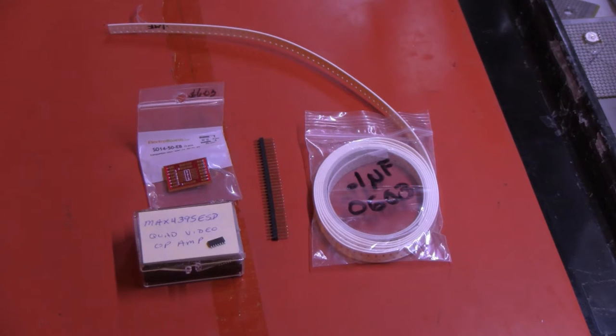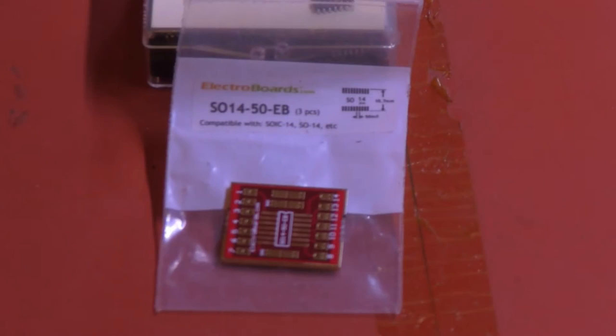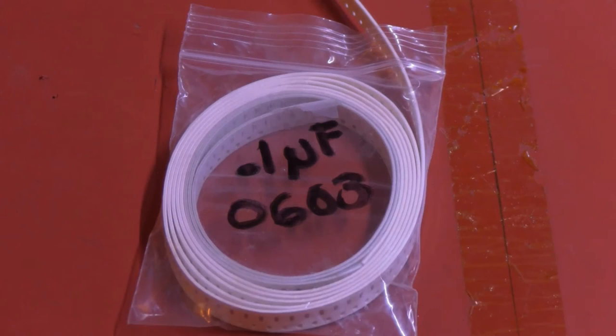I have to do this because this part is only available in the SO package as far as easy assembly goes. I will be using this adapter board made by Electro Boards, model SO-14-50-EB. This is for small outline packages with 50 mil pin spacing.